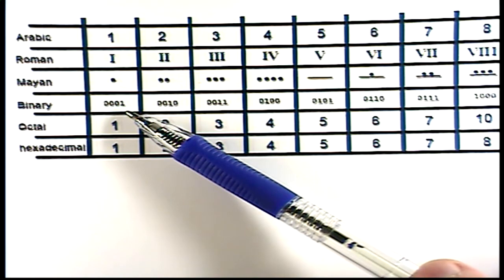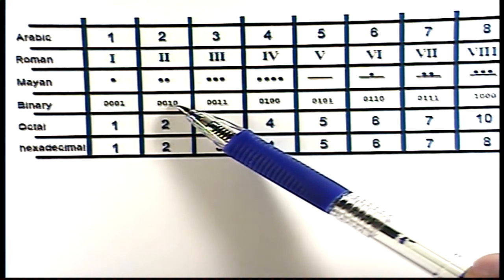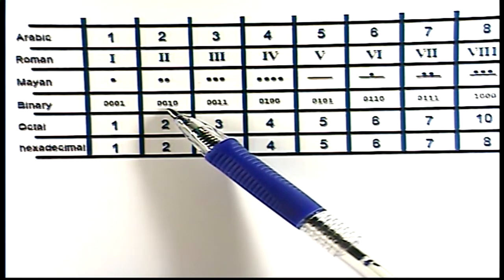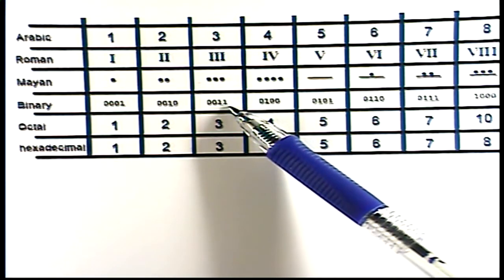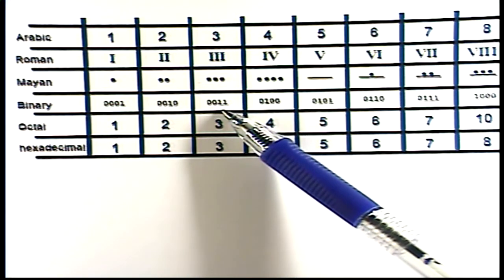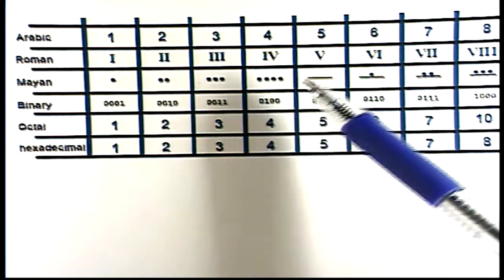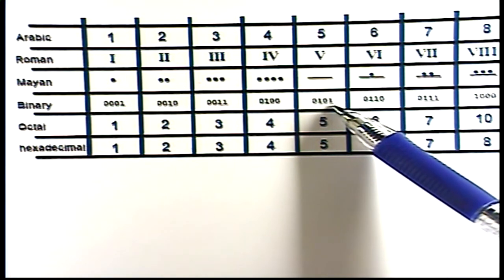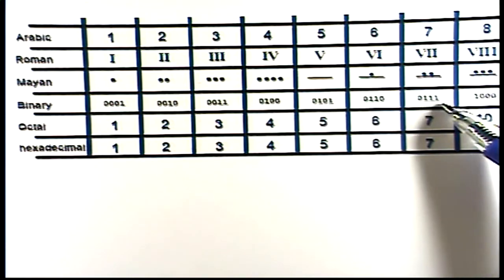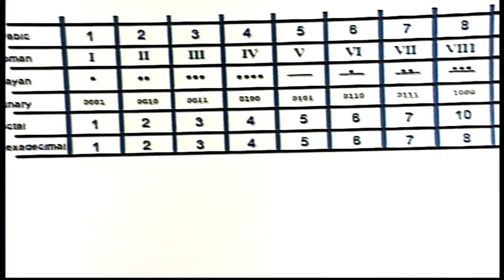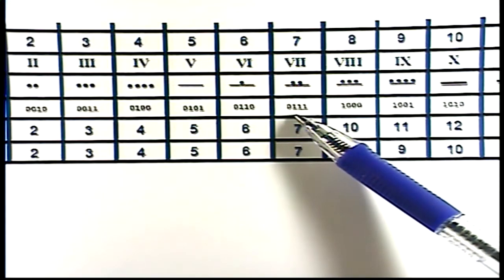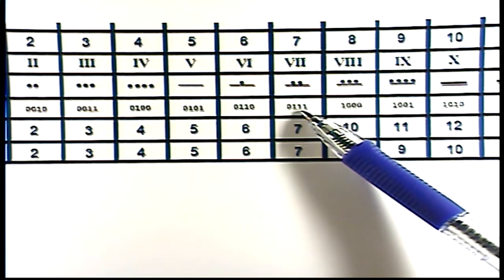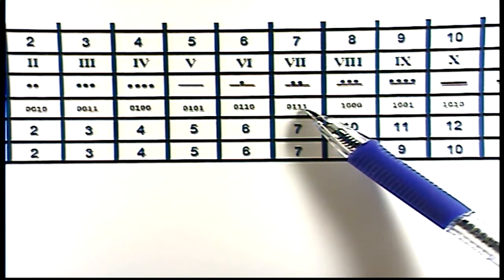And so the binary number for one is zero, zero, zero, one. Then two is zero, zero, one, zero. And so when that one is in this position, that means two. And then zero, zero, one, one means three. That means a two plus a one equals three. A zero, one, zero, zero means four. And a zero, one, zero, one means five. And a zero, one, one, one means seven. And how do we get seven? It is four plus two plus one.